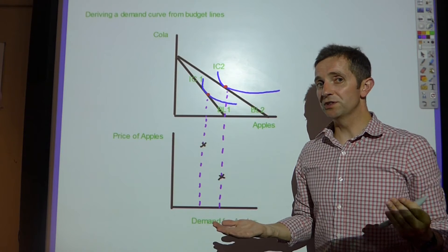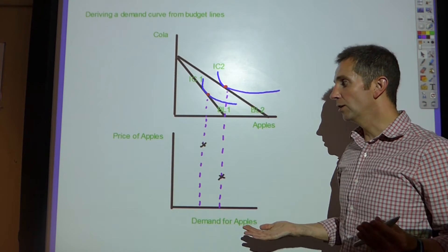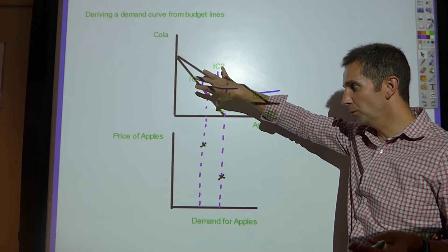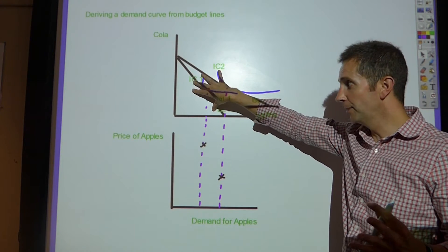So if we wanted to derive a demand curve for apples, using this diagram and the way it's set up, we would only be deriving the demand curve for apples.